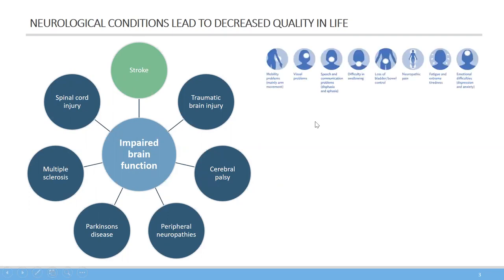This becomes especially clear when you look at the symptoms caused by stroke. They range from mobility problems, especially targeted to arm movements, to visual problems, speech and communication, difficulties in swallowing, loss of bladder control, neuropathic pain, fatigue and extreme tiredness, and emotional difficulties such as anxiety and depression. A stroke can impair motor, sensory, or cognitive tasks — so it's not selective for either of those, while some other neurological conditions show more of one of those sub-problems.